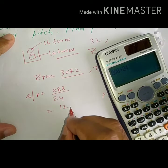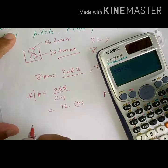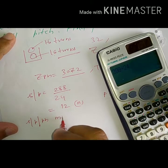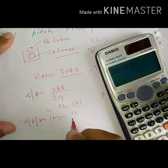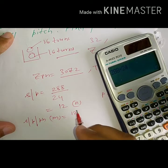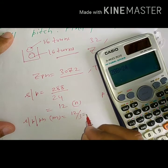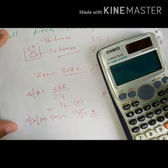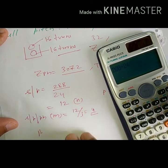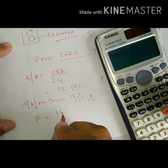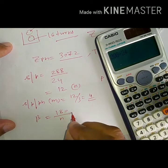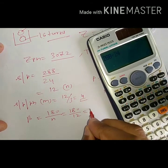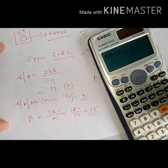Slots per pole per phase, that is m, equals slots per pole divided by number of phases = 12 divided by 3 = 4. Slot angle beta = 180 divided by slots per pole = 180 by 12 = 15 degrees.